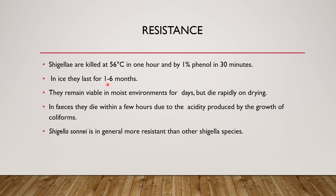Regarding resistance, Shigella are killed at 56 degrees Celsius in 1 hour and by 1% phenol in 30 minutes. In ice they last up to 1 to 6 months. They remain viable in moist environments for days but die rapidly on drying. In feces they die within a few hours due to acidity produced by the growth of coliforms. Shigella sonnei is generally more resistant than other Shigella species.